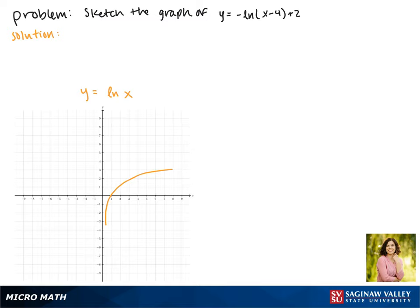Now we'll transform this function by reflecting it first. This negative out front tells us to flip it over the x-axis.